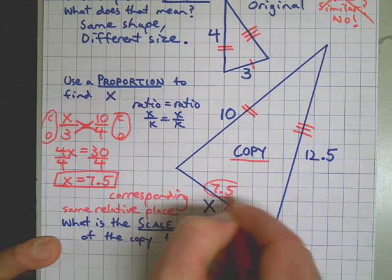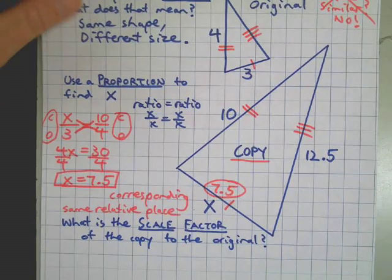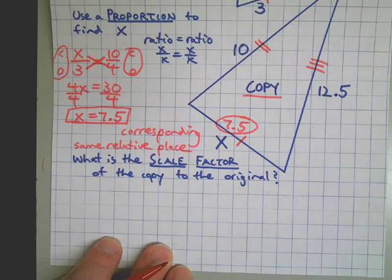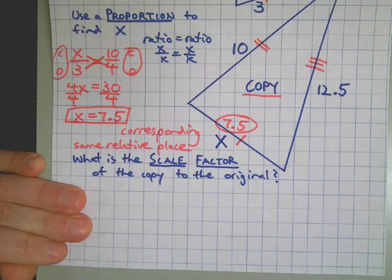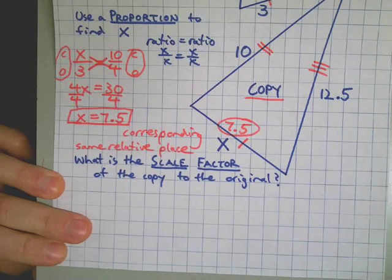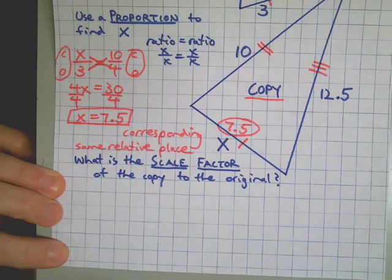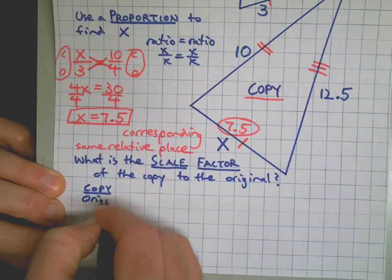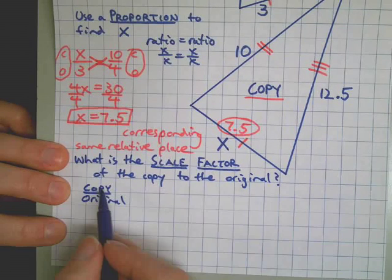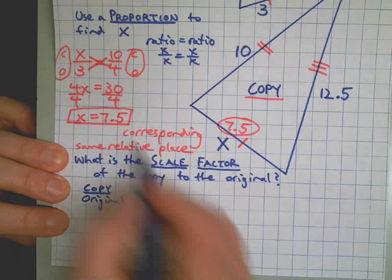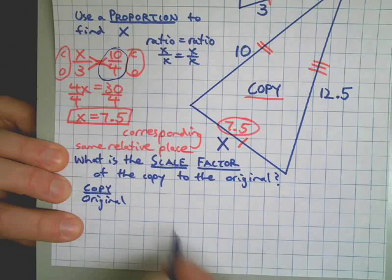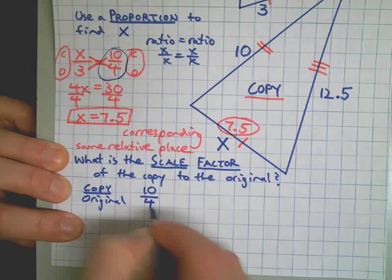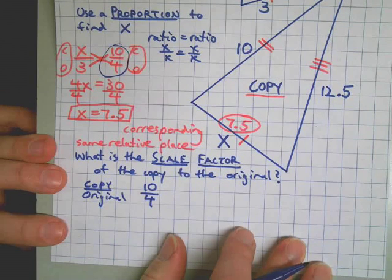And finally, what is the scale factor of the copy to the original? The scale factor is just the ratio of the two shapes. Sometimes it's larger, sometimes the copy is larger than the original, sometimes smaller, but the thing to remember is that we always put the copy on top of the original. So the scale factor, here's an easy one since I have it up here already, copy to original.